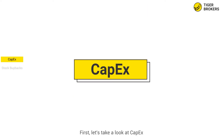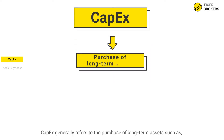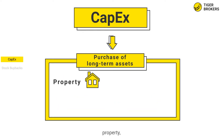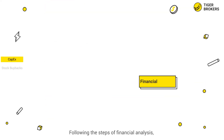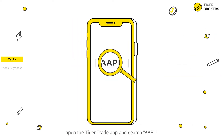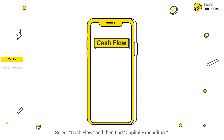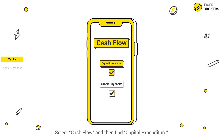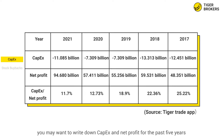First, let's take a look at CAPEX. CAPEX generally refers to the purchase of long-term assets such as property, plants, equipment, and patents. Following the steps of financial analysis, open the Tiger Trade app and search AAPL. Click on Company and then view details, select cash flow, and then find capital expenditure. For the convenience of calculation, you may want to write down CAPEX and net profit for the past five years and summarize them in a table.